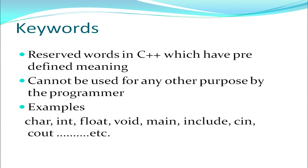First we start with keywords. Keywords are the reserved words in C++ which have a predefined meaning. These words are already known to the compiler and are known to have a particular meaning. When these words are used, the compiler is expected to perform a particular job. For example, int signifies an integer, float signifies a decimal number, and char signifies a character. So all these are keywords. I cannot use these keywords for any other purpose whatsoever.